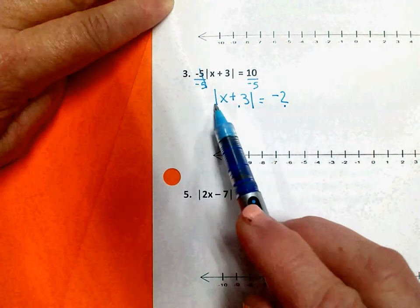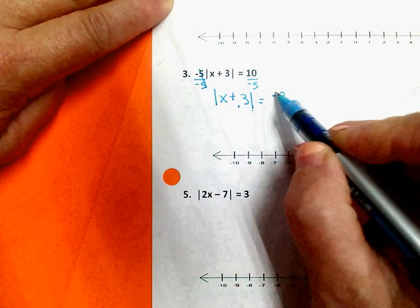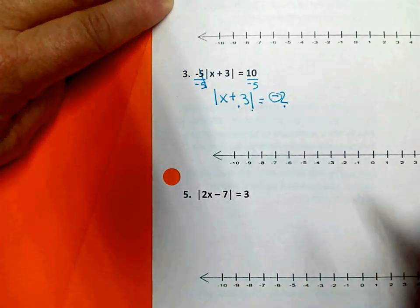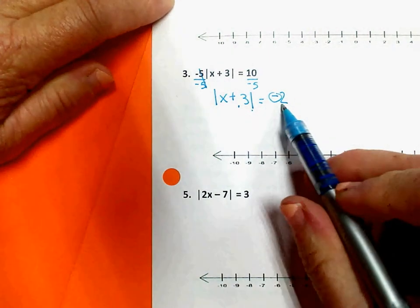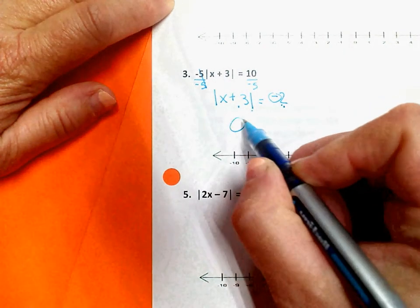But remember, an absolute value can never equal a negative number. So when you have the absolute value bars by themselves, and it's equal to a negative number, there will never be a solution.